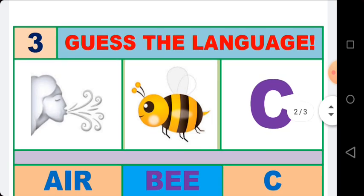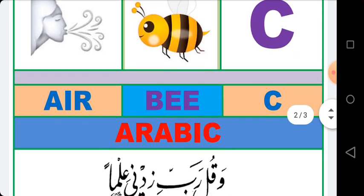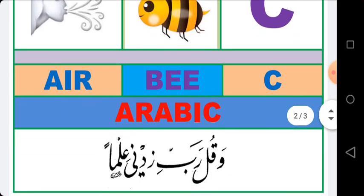On the left side is the girl blowing out air — she's exhaling air. In the middle is the emoji of 'b', then the letter 'c' — air, b, c. So the name of the language is Arabic. You can see the written Arabic in the picture.